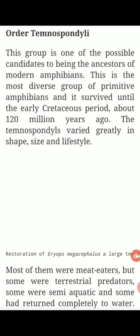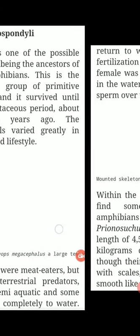Order Temnospondyli is one of the possible candidates to being the ancestor of modern amphibians. It is the most diverse group of primitive amphibians and survived until the early Cretaceous period. The Temnospondylees varied greatly in shape, size, and lifestyle. Most of them were meat-eaters: some were terrestrial predators, some were semi-aquatic, and some had returned completely to the water.